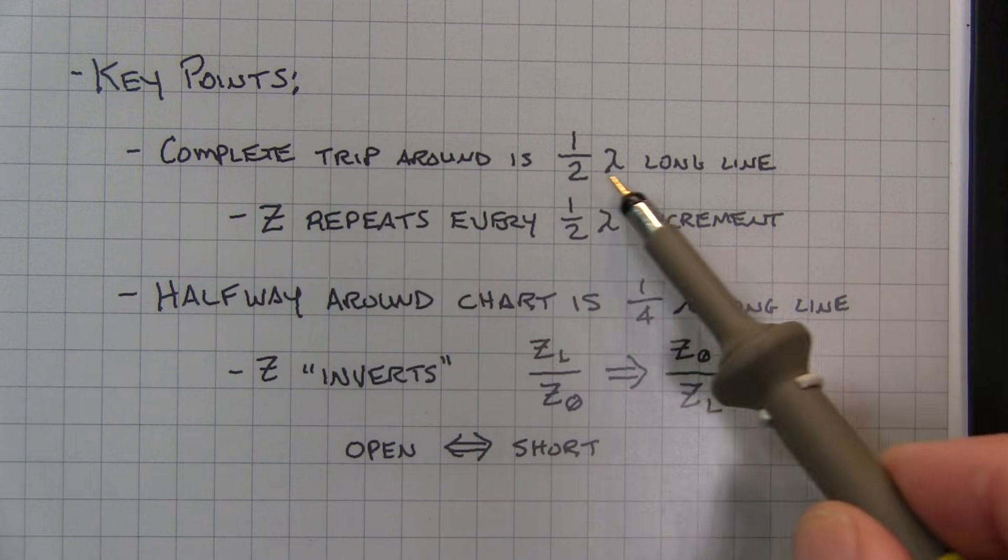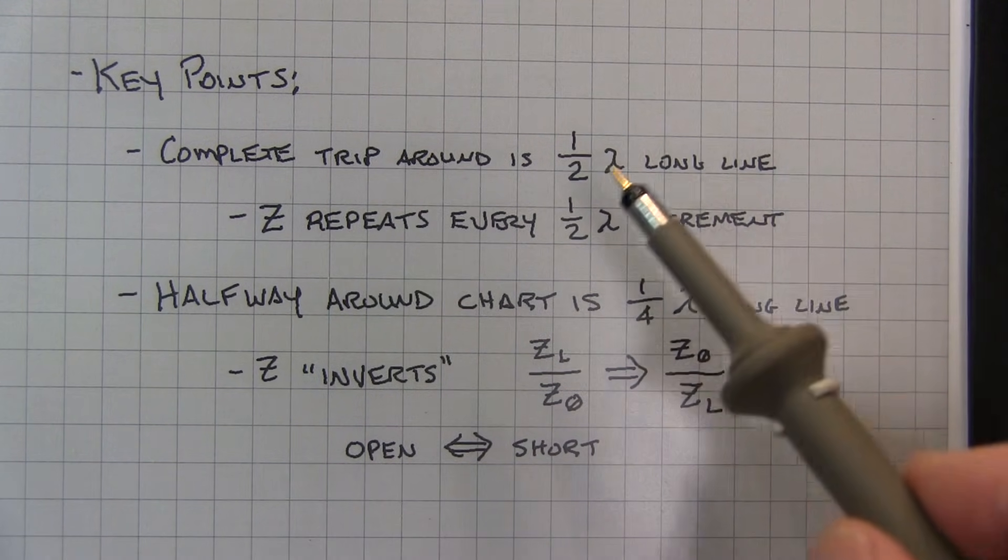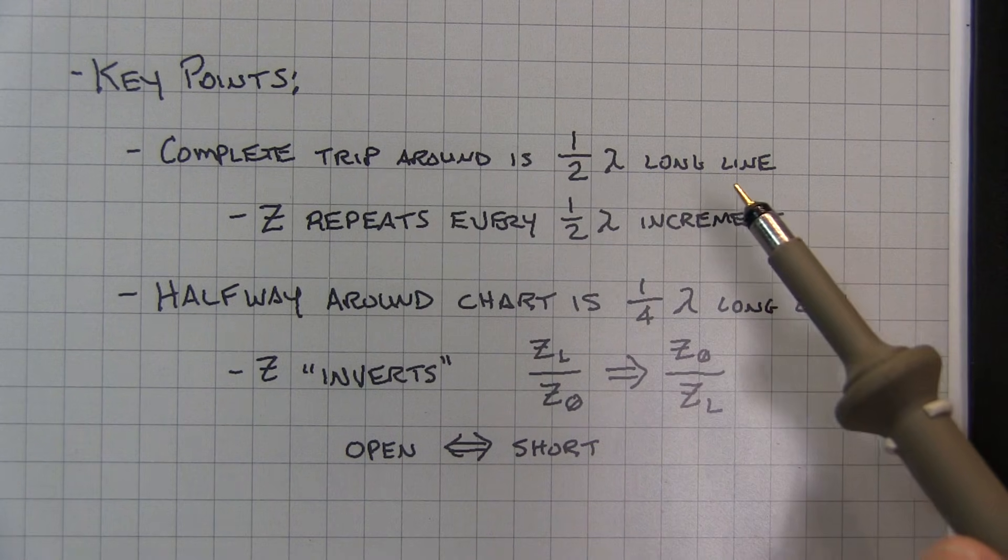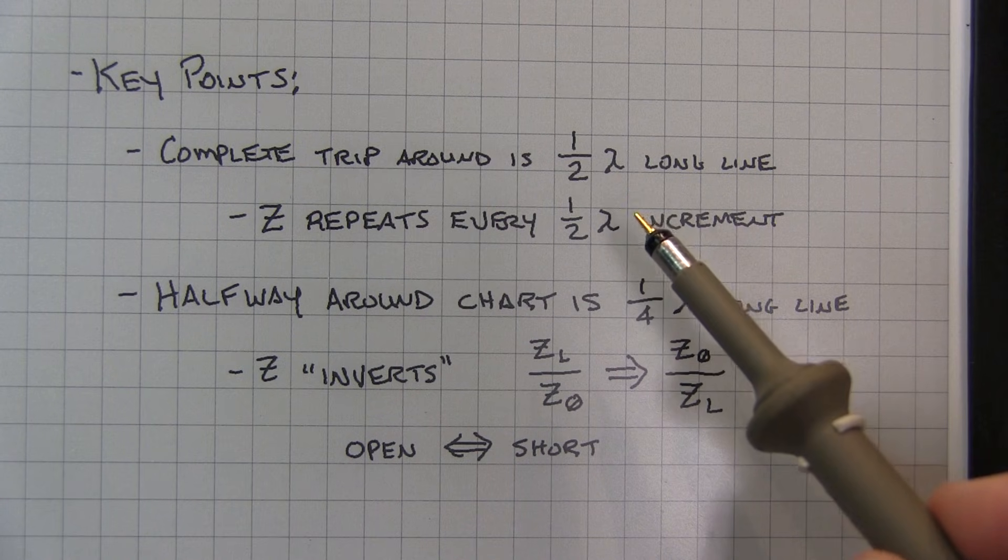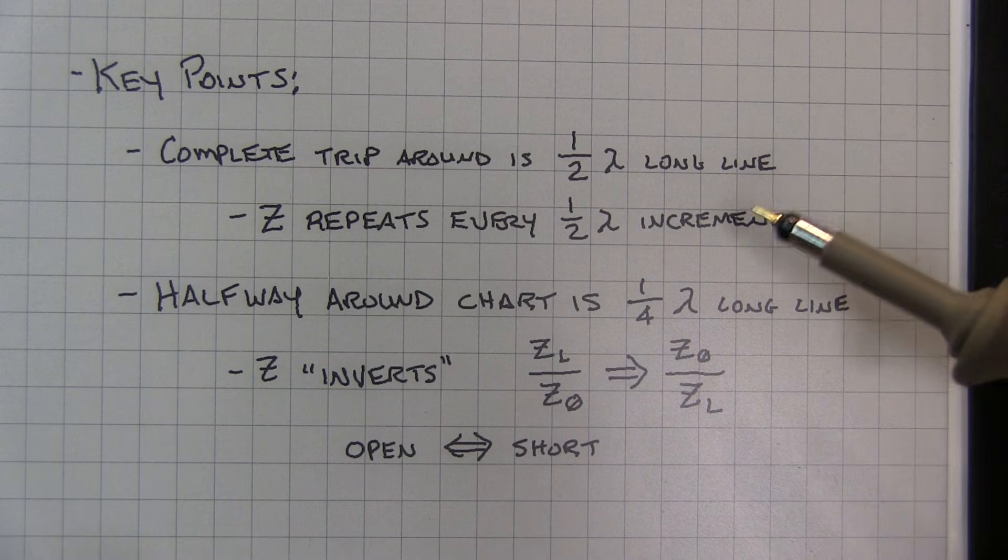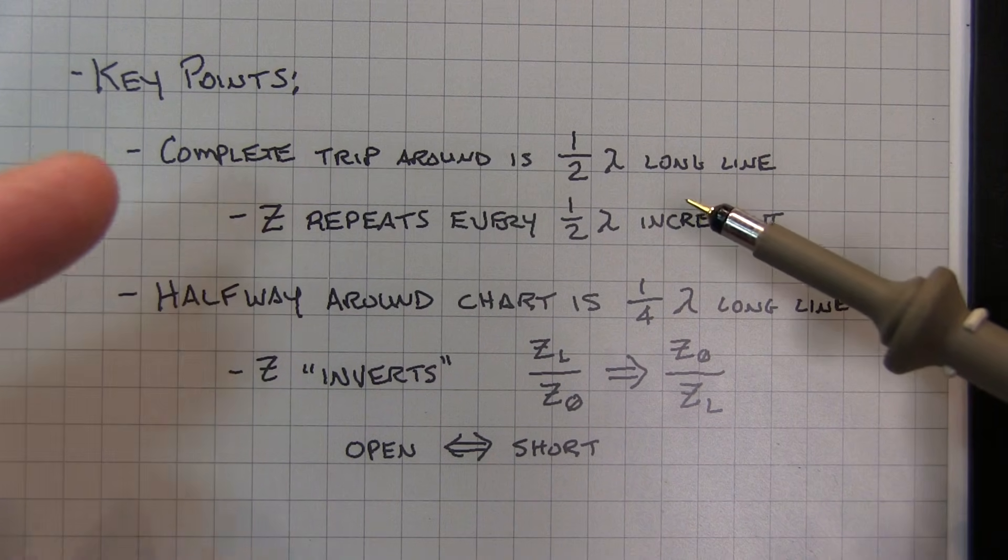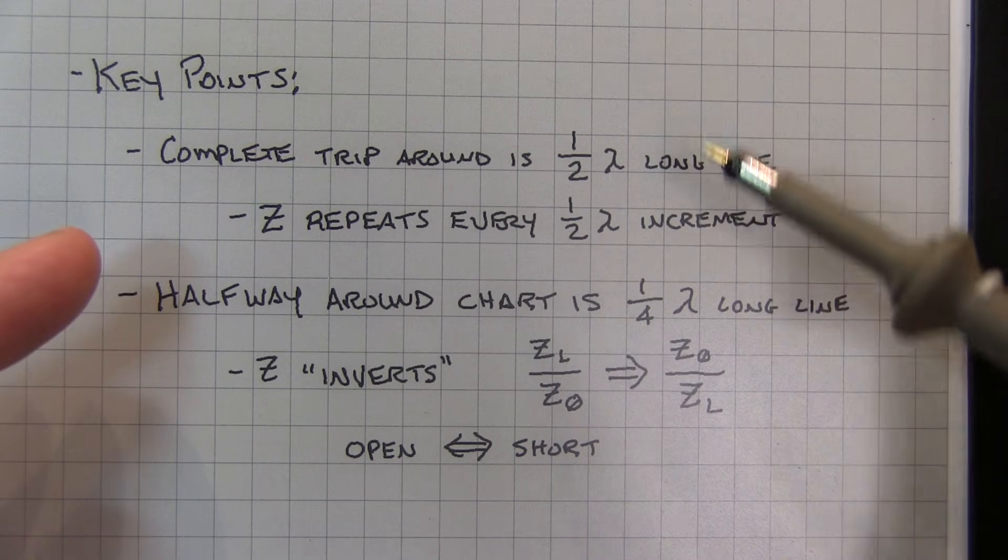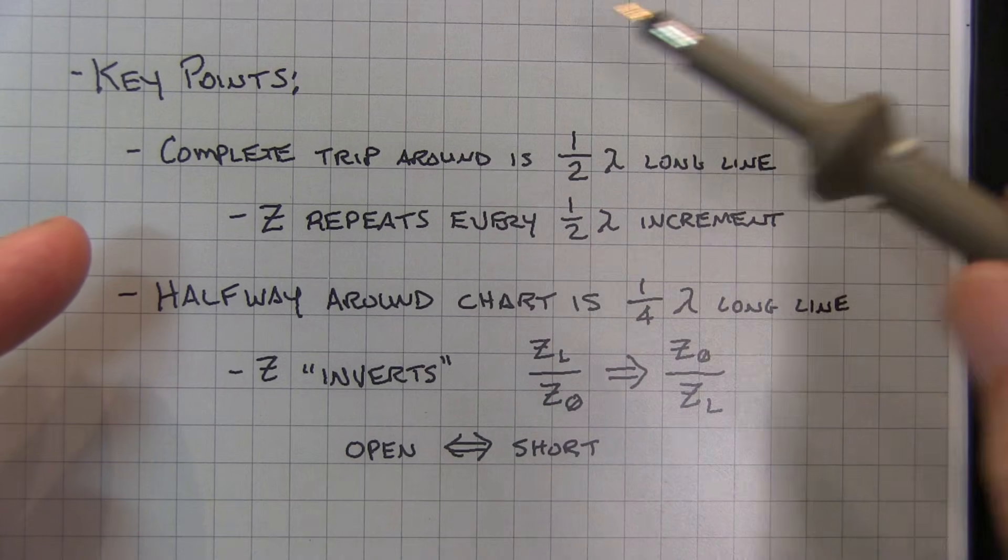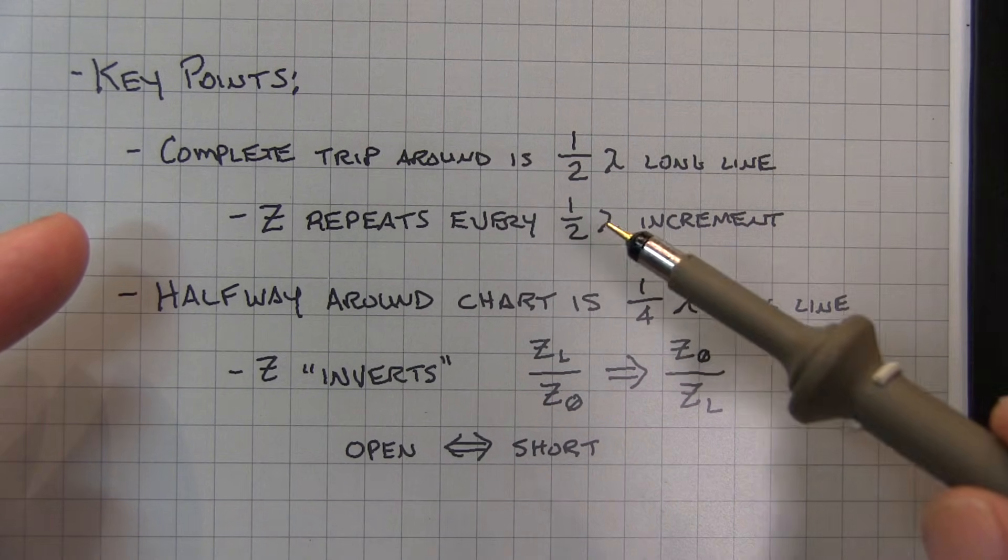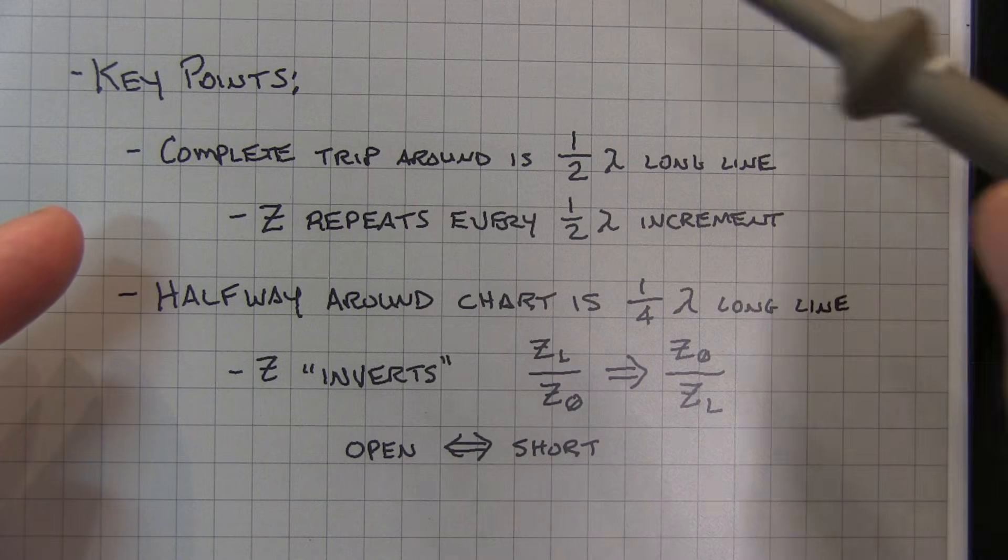Now a couple of key points. One complete trip around the Smith chart represents a half-wavelength long line. Since we're winding back up at the same point, that means the impedance looking into the line is equal to the impedance at the end of the line when the line is a half-wavelength long. So the impedance repeats every half-wavelength increment.